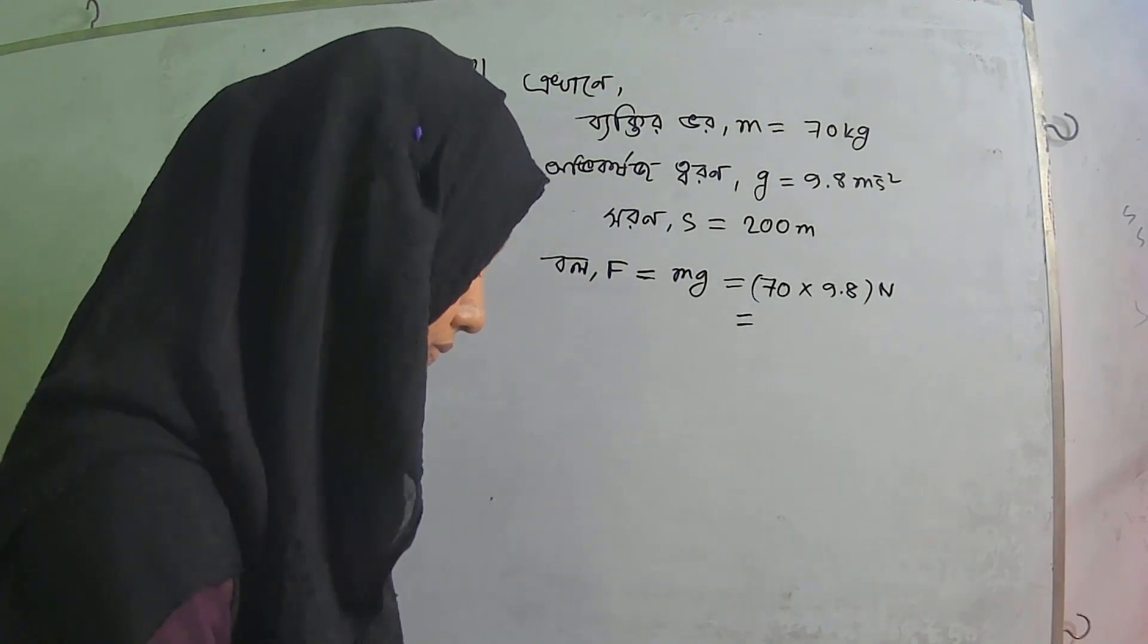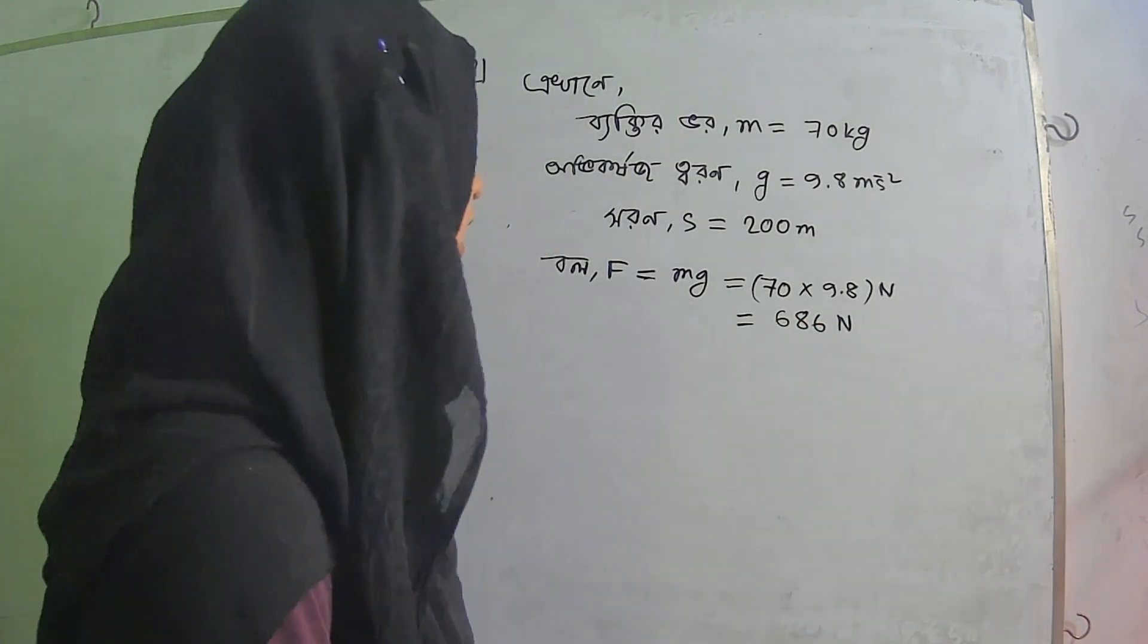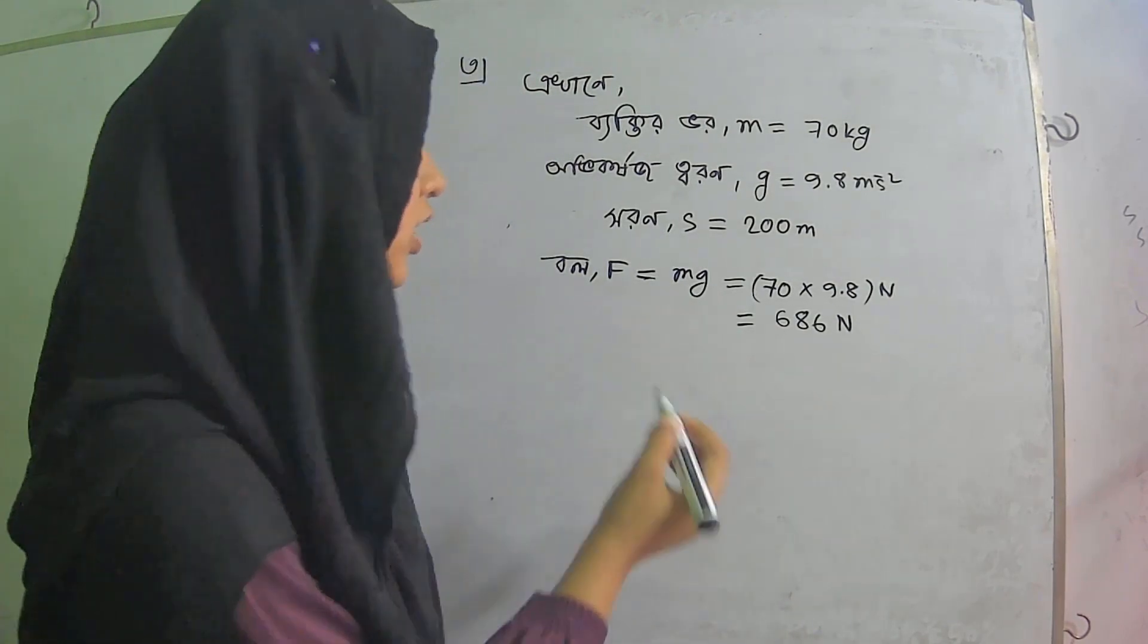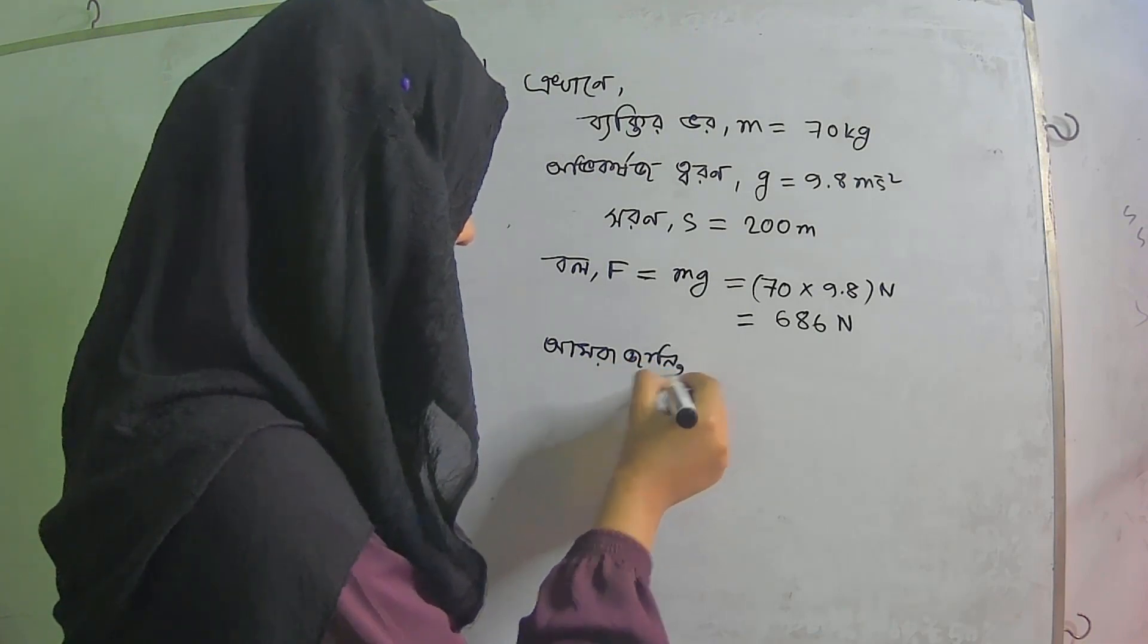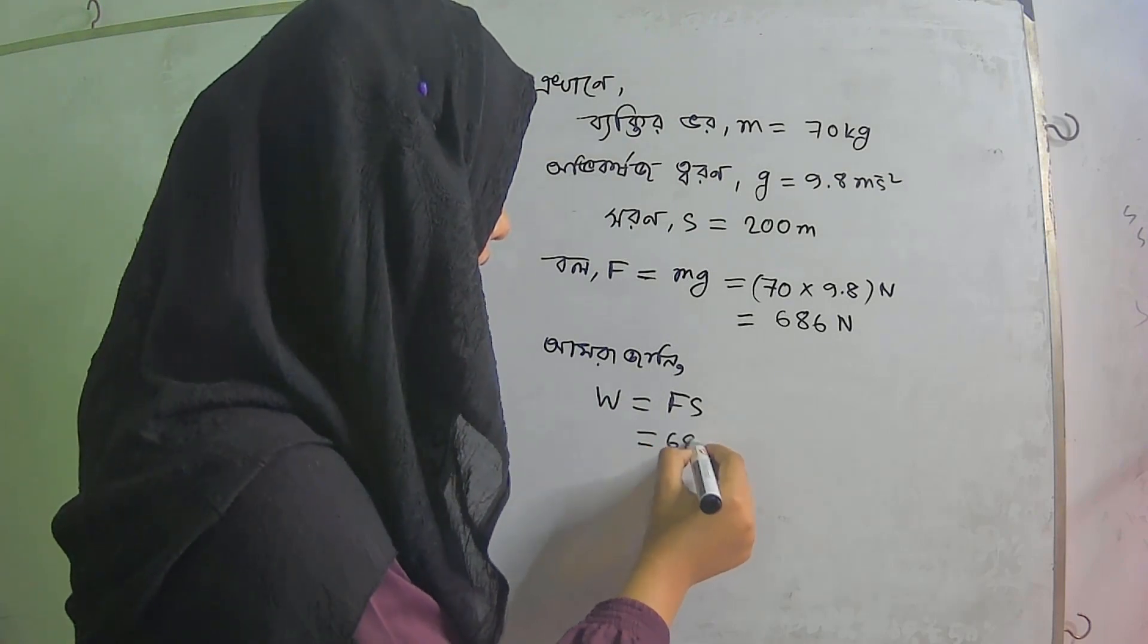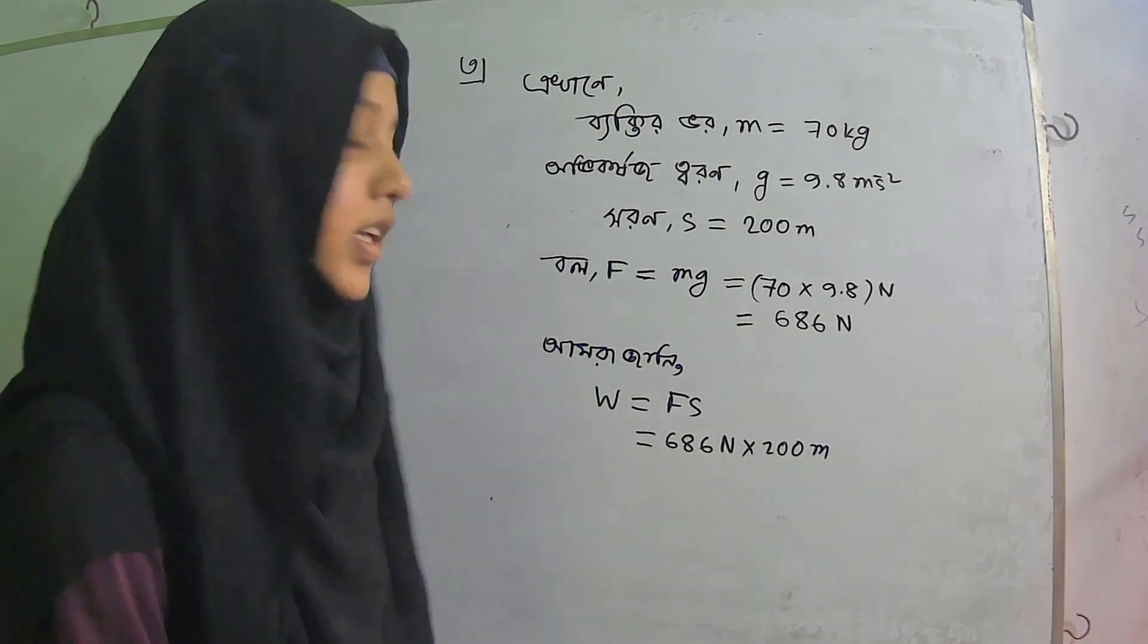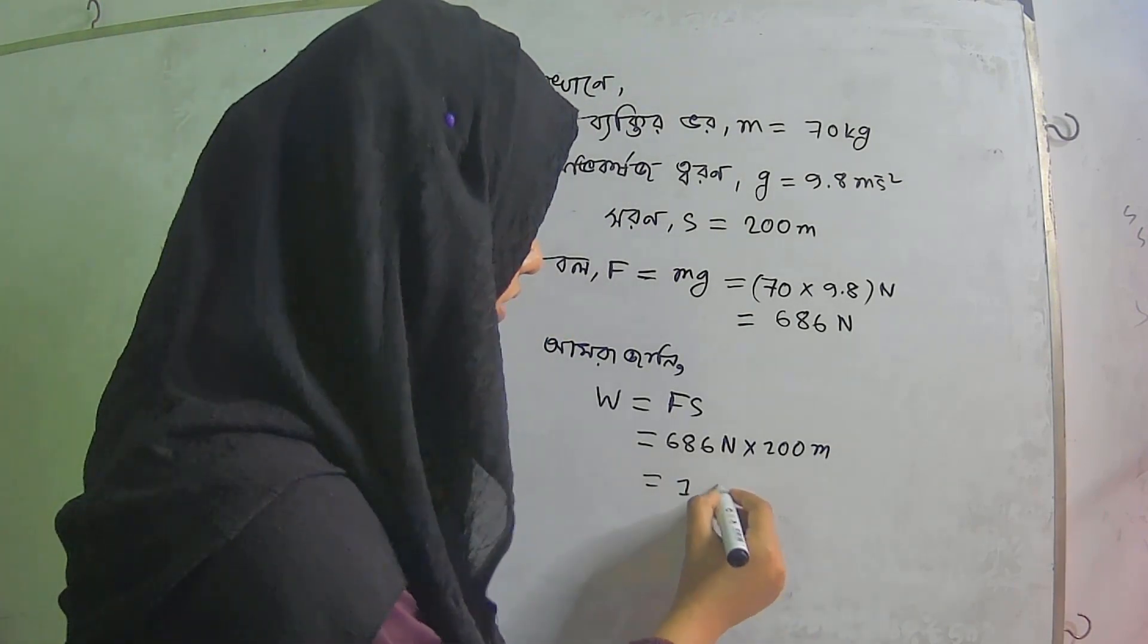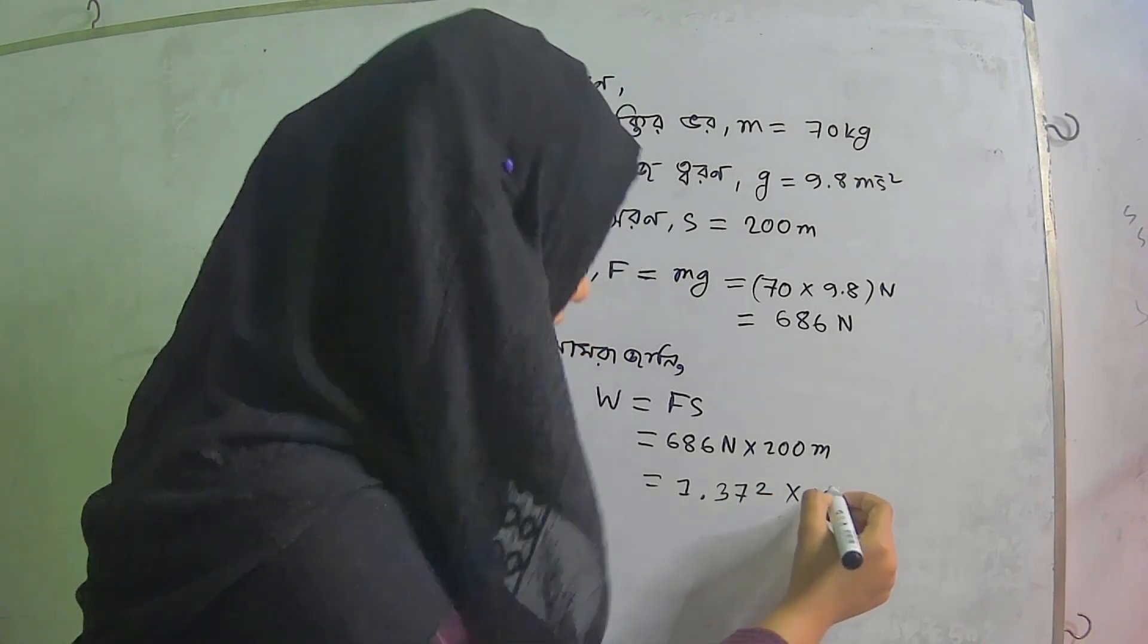686 newton. Equal to F times S, 686 newton into 200 meters. This equals 1.372 into 10 to the power 5 joules.